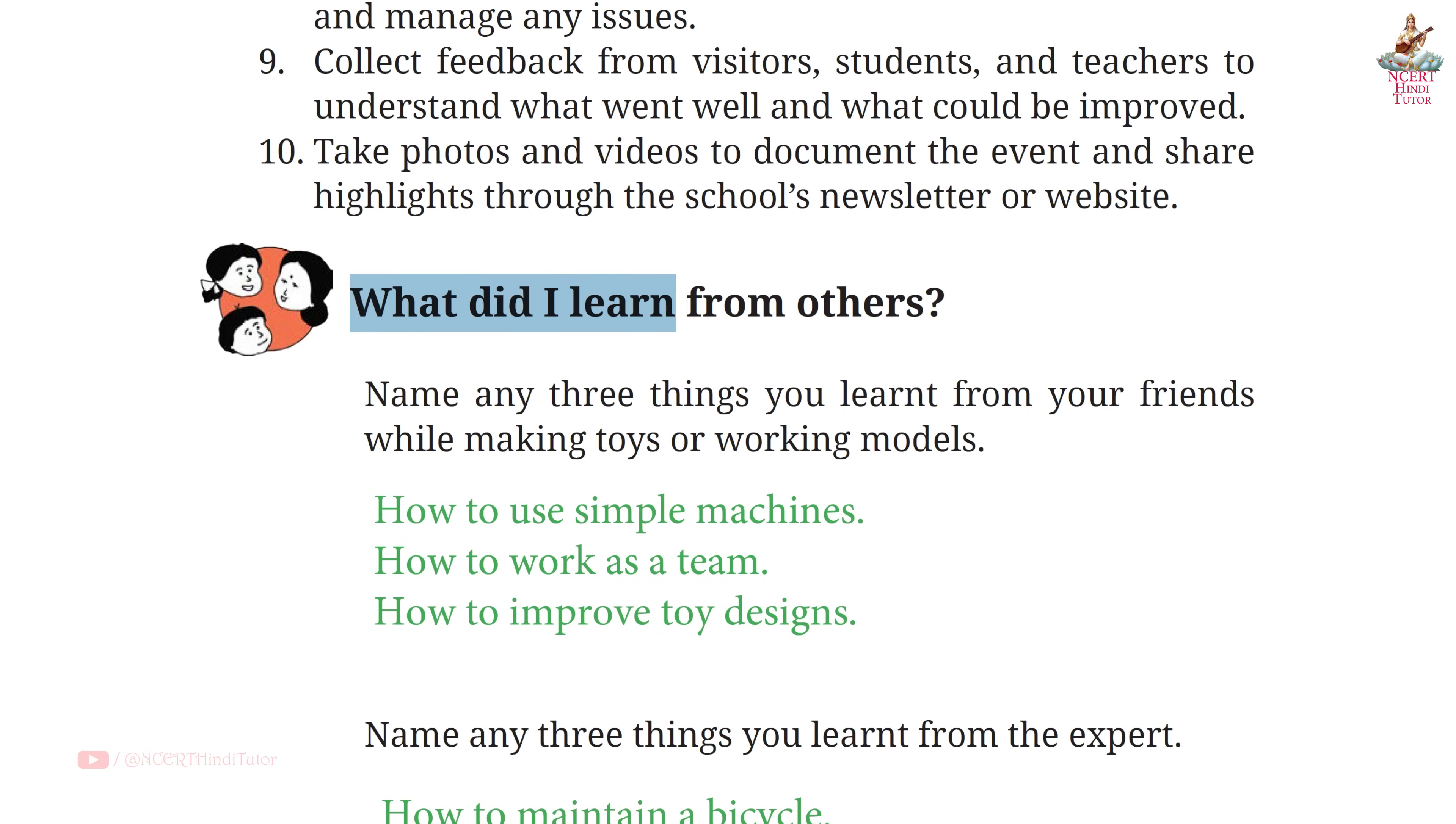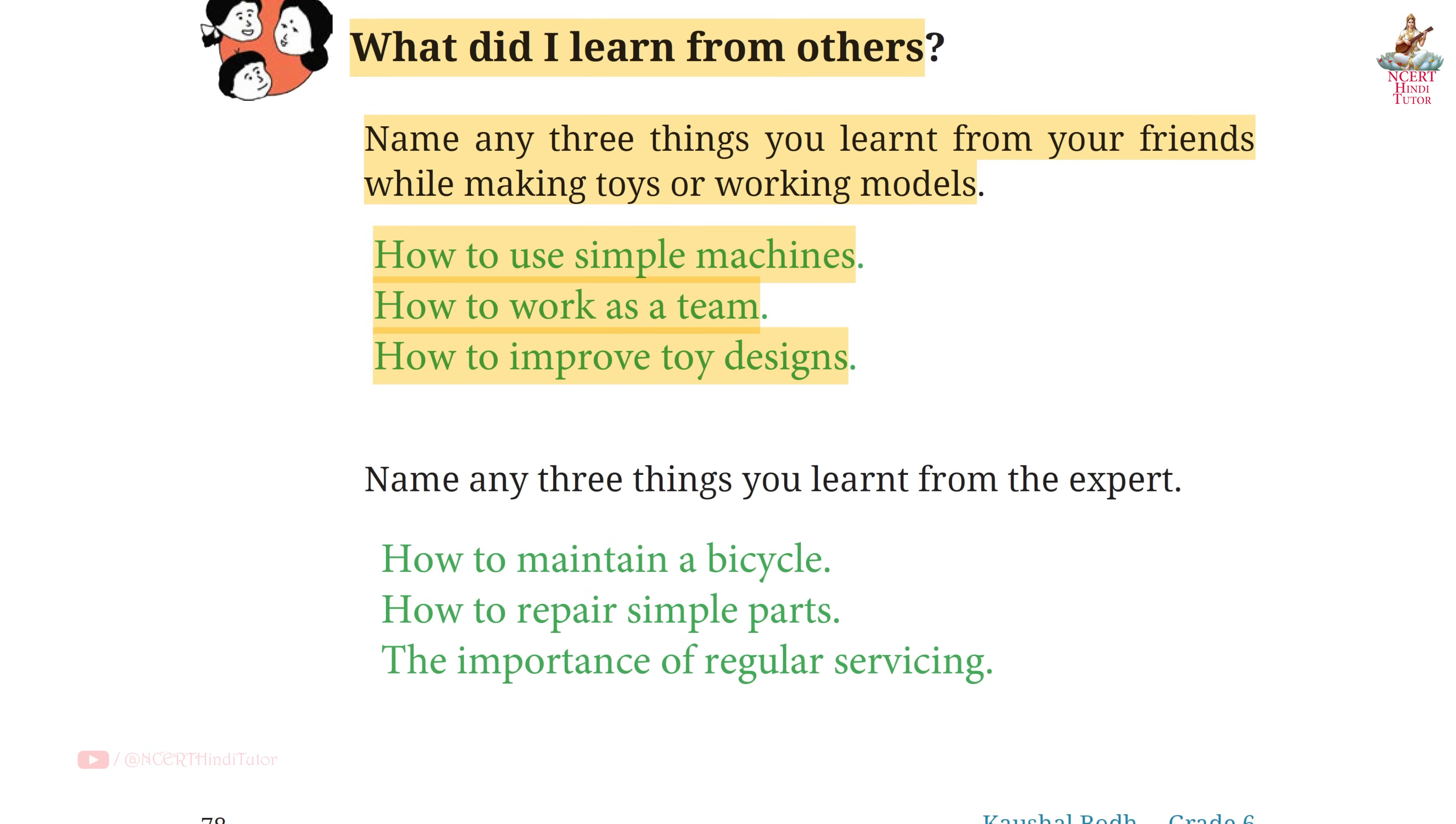Page 78, What did I learn from others? Name any 3 things you learned from your friends while making toys or working models. Answer: How to use simple machines? How to work as a team? How to improve toy designs? Next, Name any 3 things you learned from the expert. Answer: How to maintain a bicycle? How to repair simple parts? The importance of regular servicing.